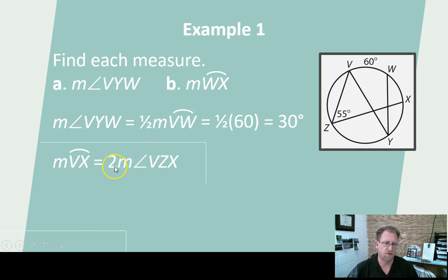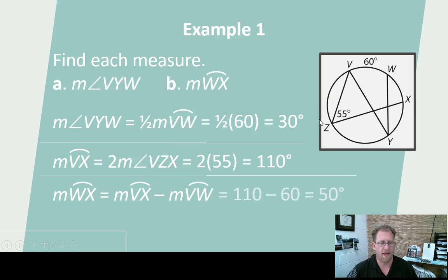The arc is going to be twice the measure of the angle VZX. This is 55 degrees, and so this arc should be 110 degrees. Now, this whole thing is 110, but I'm only being asked for arc WX. Well, the remaining would be 50 degrees of arc. So you just subtract. And so the difference is 50 degrees of arc.